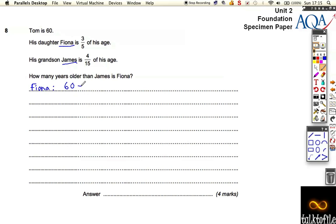we've got to do 60 divided by 5 to help us find that. So 60 divided by 5 is 12, but that would find one-fifth of his age and we want three-fifths. So then we do 3 times 12, which is equal to 36. So Fiona is 36 years old.